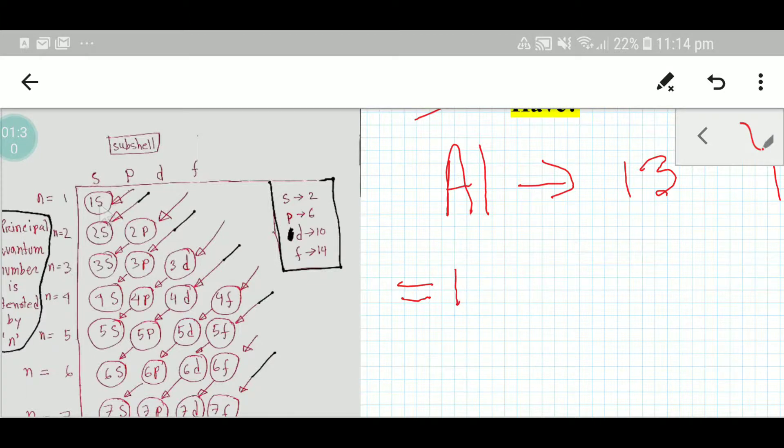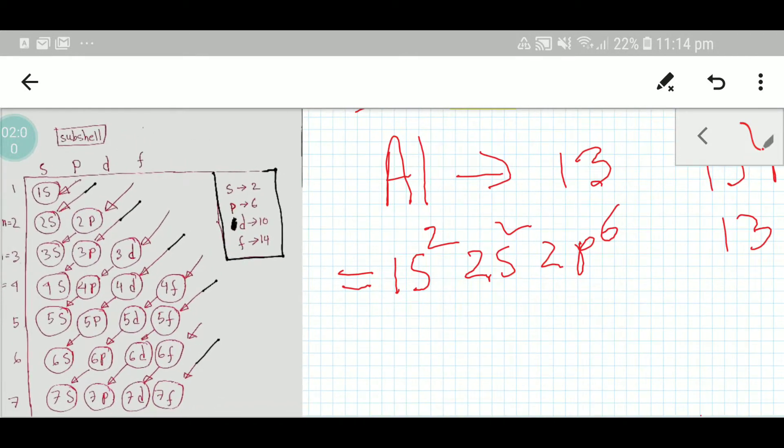We have to place two electrons into 1s, then we have 2s2, then 2p6. So we have here 6 plus 2 is 8, total 10 electrons. After 2p we have to take 3s.